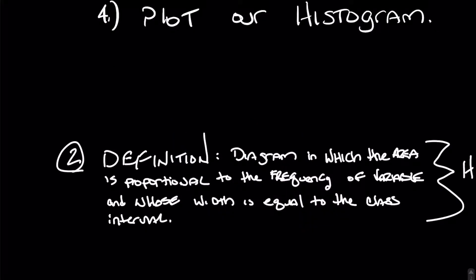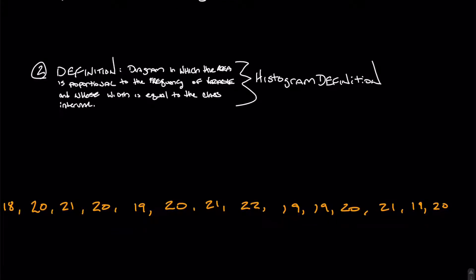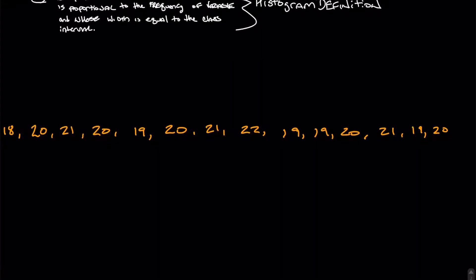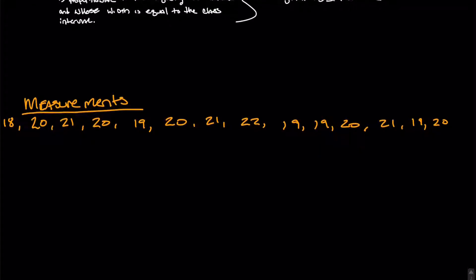All right, so I have the definition of a histogram here. The definition for a histogram is a diagram in which the area is proportional to the frequency of variable and whose width is equal to the class interval. I said earlier that we needed numbers or we needed some measurements. So right here we have measurements. I went ahead and put some in. So let's say we have these measurements in place. So that's the first step, right? Step number one, we have our measurements.